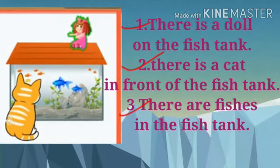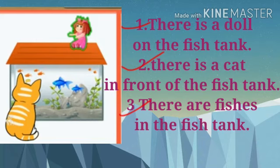Observe this picture. You can see that there is a doll on the fish tank. There is a cat in front of the fish tank. There are fishes in the fish tank. There are little stones in the fish tank. There is water in the fish tank.